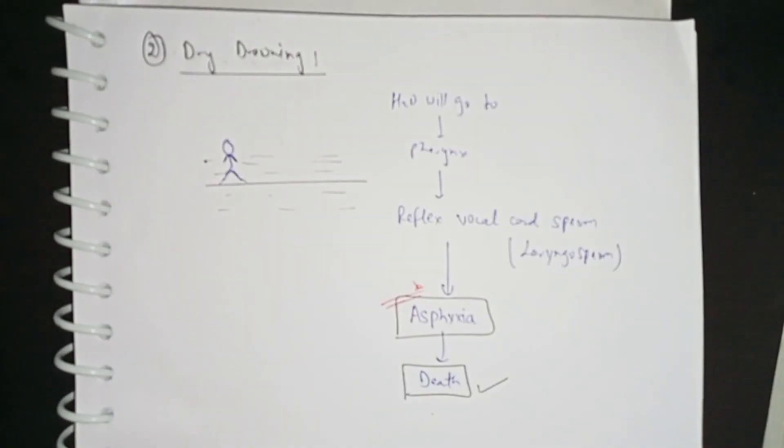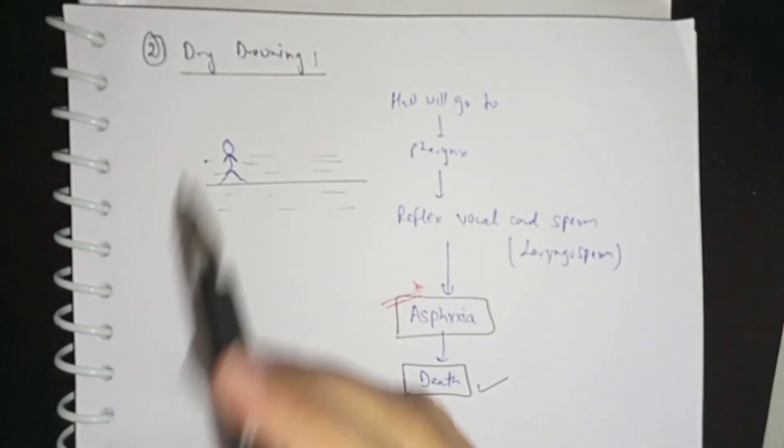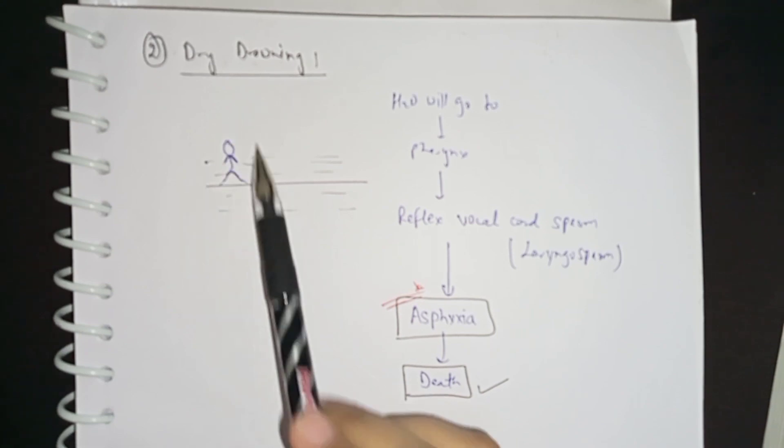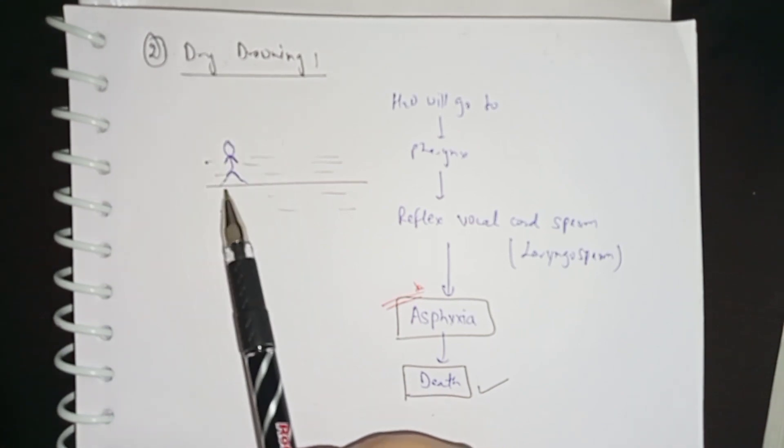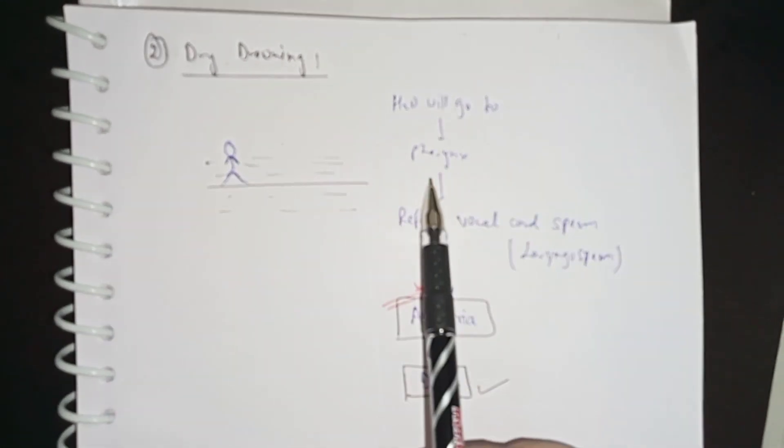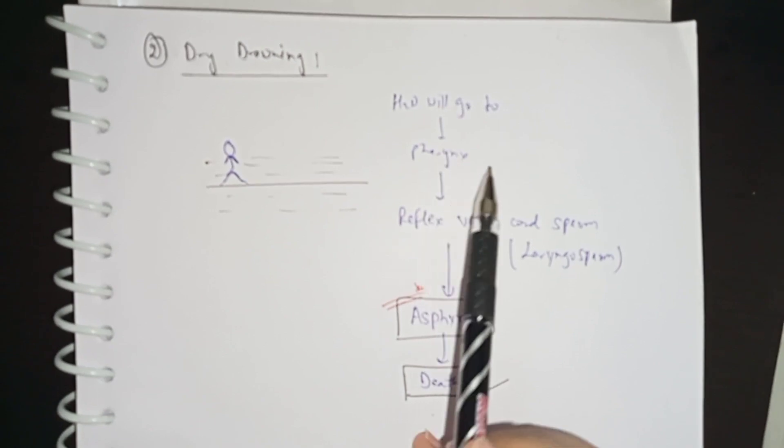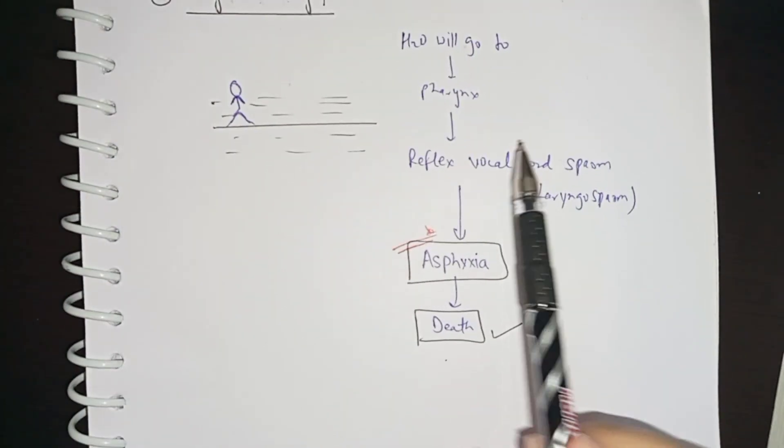Now we will discuss the third type of drowning - that is dry drowning. The person will be in water surface. Water will first go to the pharynx. After the pharynx, you will have a larynx. Larynx is also called vocal cord or voice box.